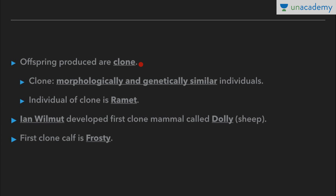The offsprings which are produced are called clones. Morphologically and genetically similar individuals are called clones — they are exactly similar morphologically and genetically. The individual of a clone is called a ramet. So the clone refers to the group which are similar, and the individual of that clone is called a ramet.